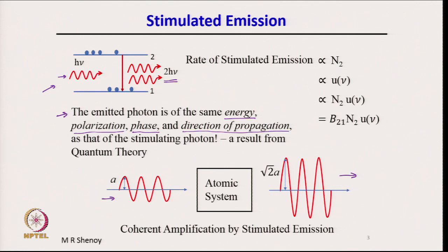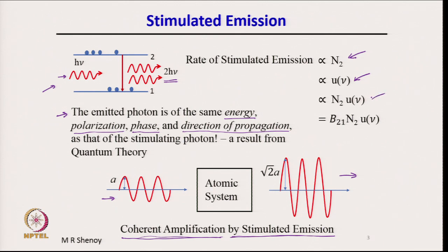Stimulated emission enables coherent amplification without change in the input phase of the signal. The rate of stimulated emission is proportional to N2, the number of atoms in the excited state, and also proportional to U_nu, the spectral energy density of radiation at that frequency, because stimulation requires another photon. Therefore, the rate of stimulated emission equals B21 × N2 × U_nu.